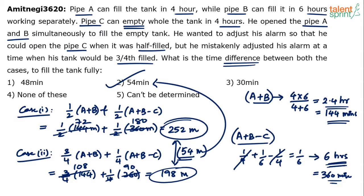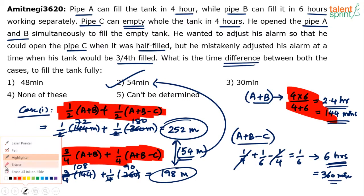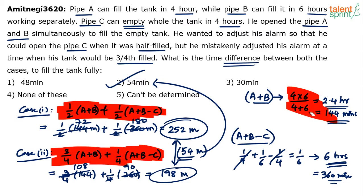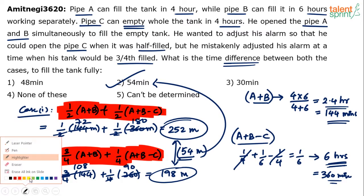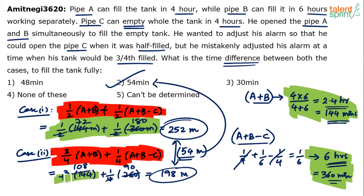This is a very simple question — you just need to understand it properly and try it out. When doing it yourself, you don't have to write out all the intermediate case descriptions; just focus on finding the time when A and B work together and the time when all three work together, then substitute the values. Cut down the number of steps and get the answer as quickly as possible by playing with the numbers. Option 2, 54 minutes, is the final answer.